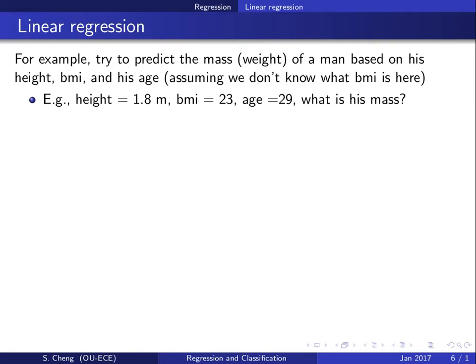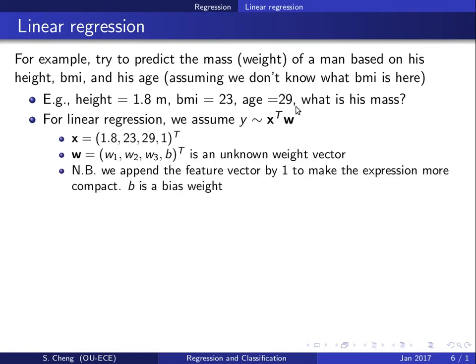As a simple example, suppose we want to predict the mass of a person and the inputs are height, BMI, and age. We assume we don't know the definition of BMI, so we can't compute mass directly. For instance, height is 1.8 m, BMI is 20.50, age is 29, and we want to estimate the mass. Let's use a linear regression algorithm — just fit a line to the inputs to get the output.